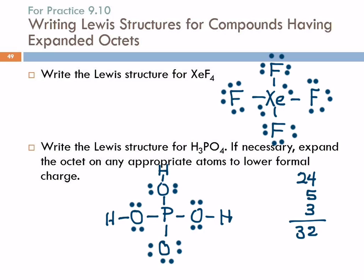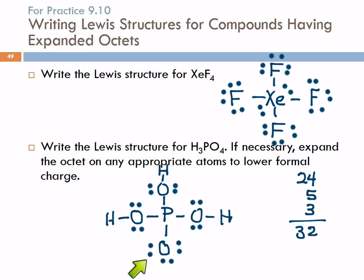Looks good, right? But we've got to look at the formal charges. Formal charges are tied in very closely with the number of bonds that an element likes to make. Oxygen likes to make two bonds, and if oxygen has two bonds it has a formal charge of zero — its formal charge is not zero if it only has one bond. The oxygens that have two bonds all have formal charges of zero because they own six electrons. This one oxygen with only one bond has a formal charge of negative one. What's the formal charge on the phosphorus? It's got to be plus one.